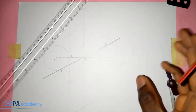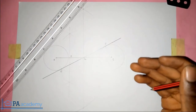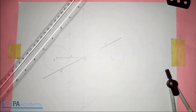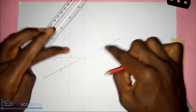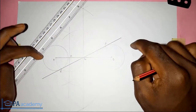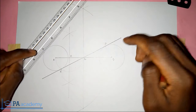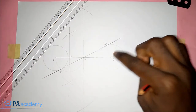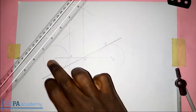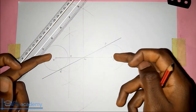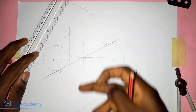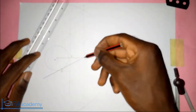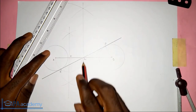So this is how you draw a common internal tangent to two equal circles. Let me summarize: the first thing you do is draw the two equal circles — make sure they are equal. Take note of the centers: point A and point B. Then you bisect line AB, which gives us the bisector line and point C.